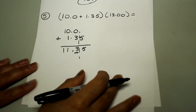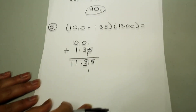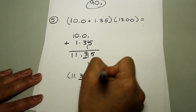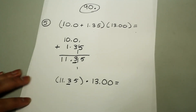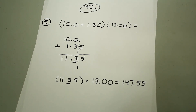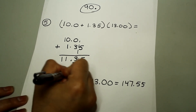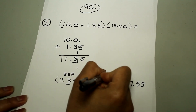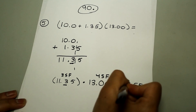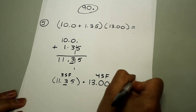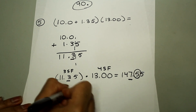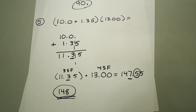I'm going to rewrite this problem, replacing the parentheses portion with 11.35. So 11.35 — with the 3 underlined — times 13.00 equals 147.55. This first factor has three significant figures and the second has four significant figures. So the answer is going to have the least number of significant figures, which is three. That's at the seven, and the five to the right tells us to round up. So the final answer is 148.